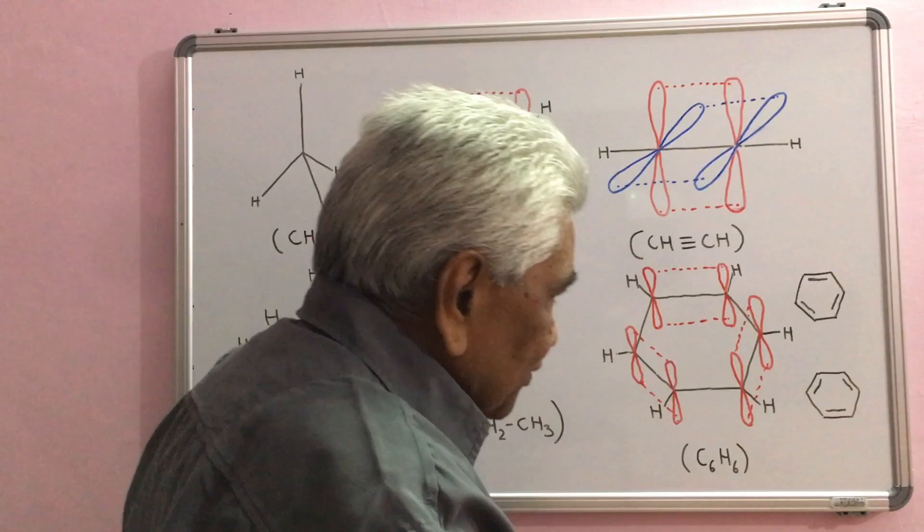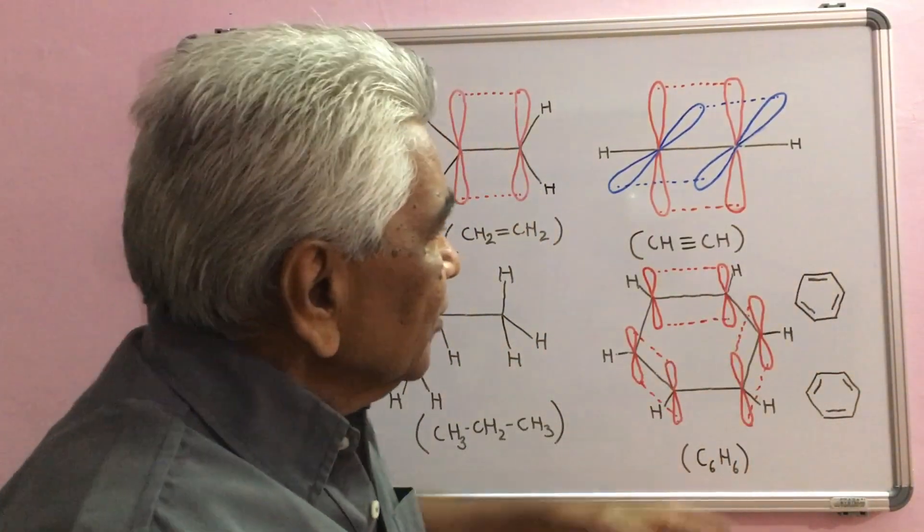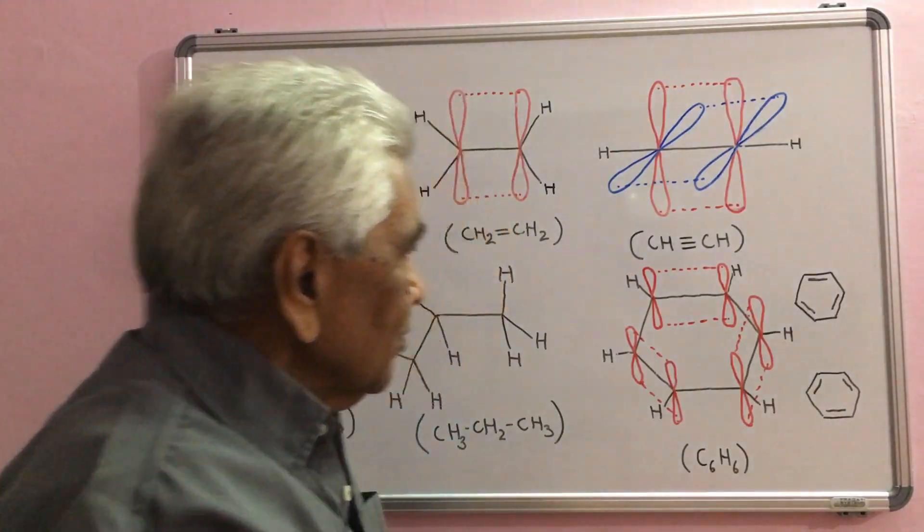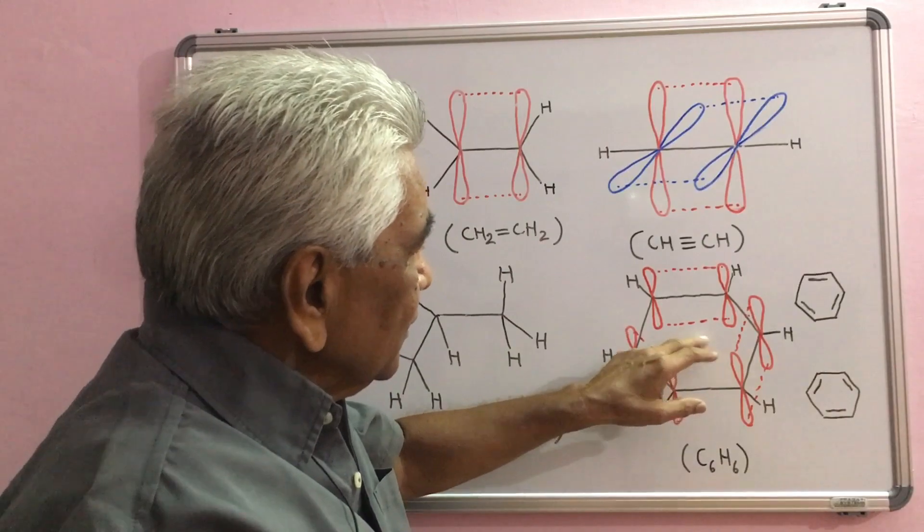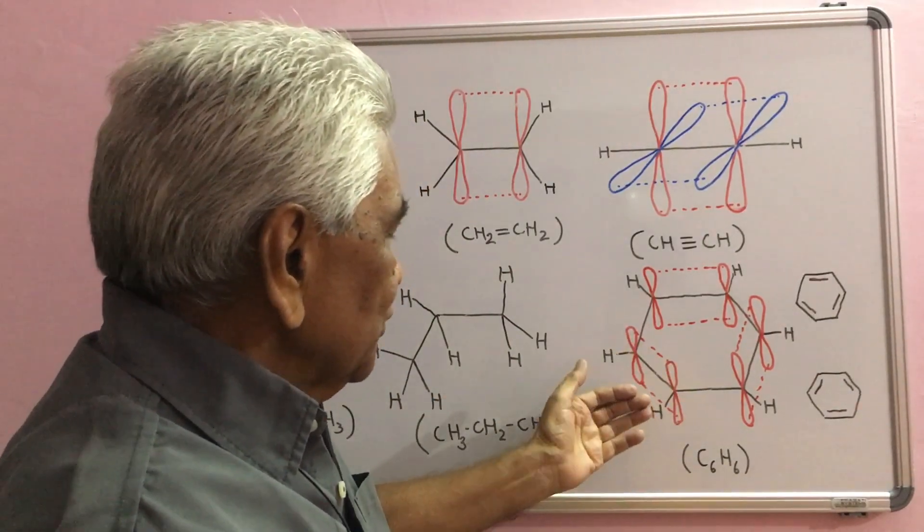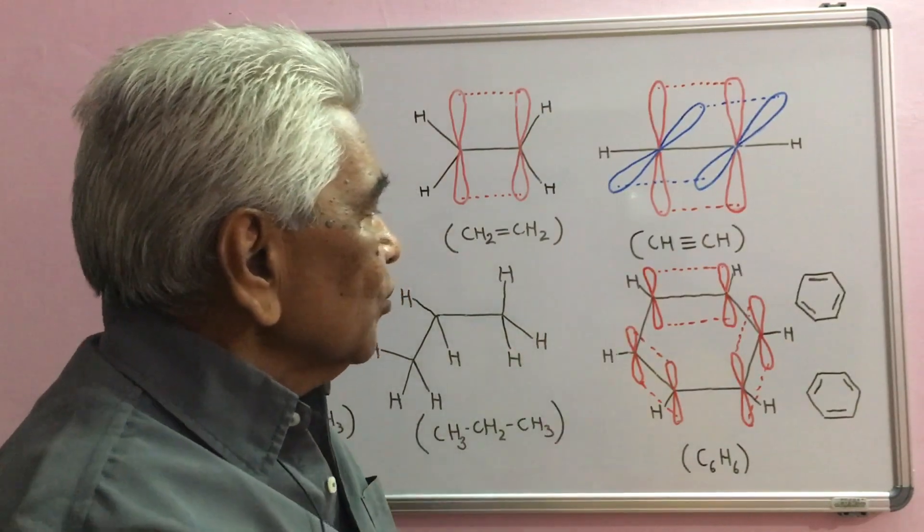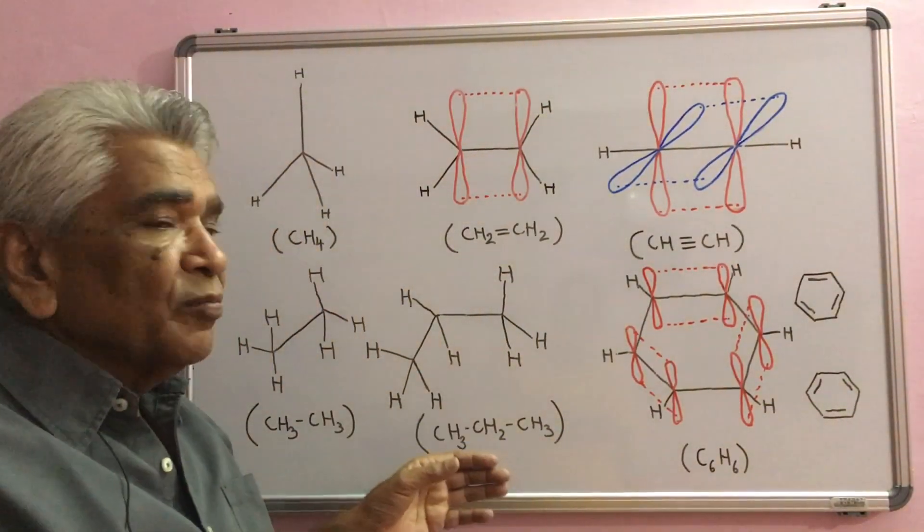And for simplicity, we put a circle to avoid writing these double bonds. This phenomenon we will read in detail in our next video when we will talk about resonance or delocalization of pi molecular orbitals.